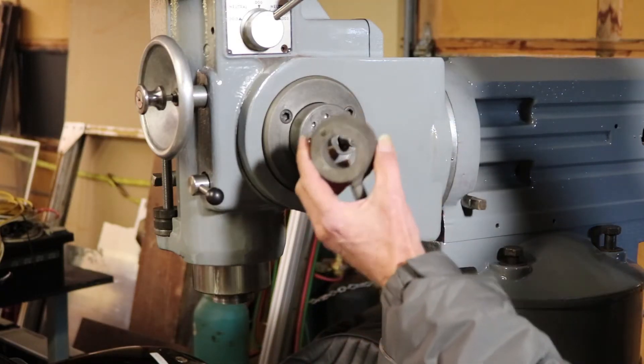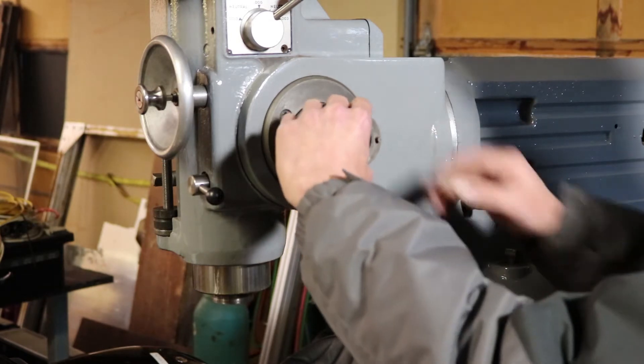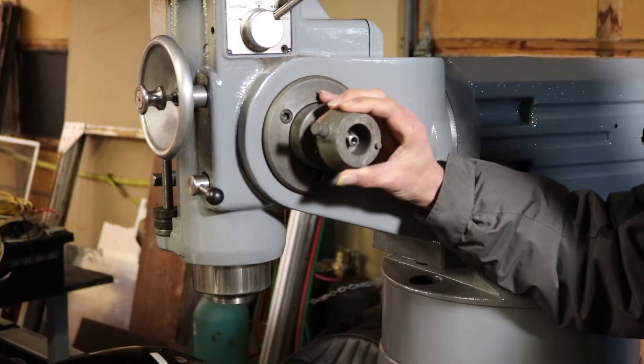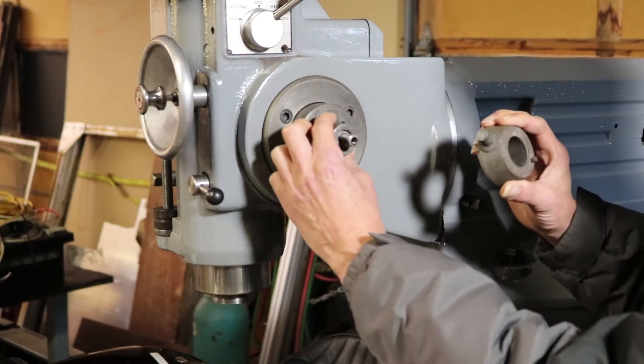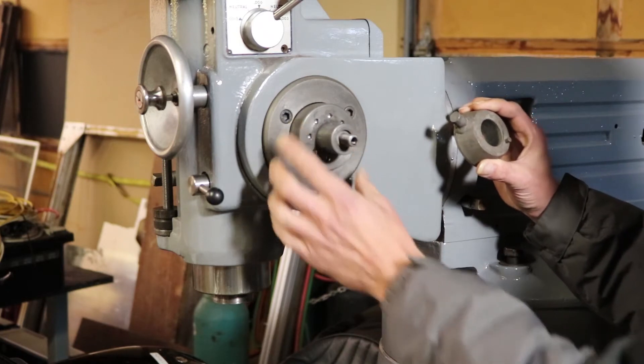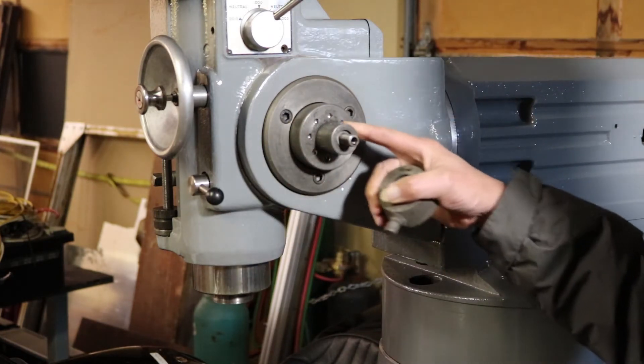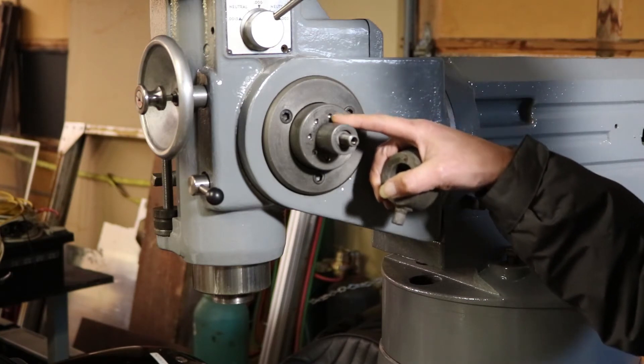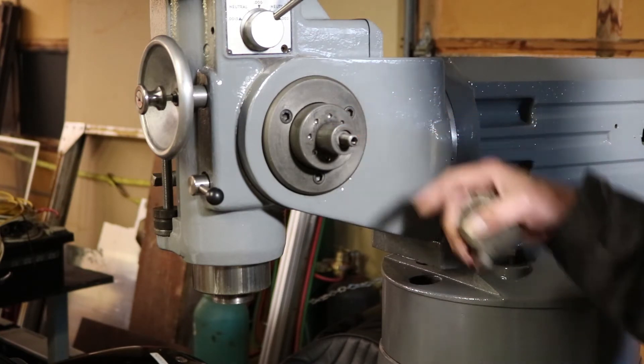This is the old collar for the handle. It was absolutely locked to this piece here. And this is part of the clutch mechanism for the power feed on the quill.